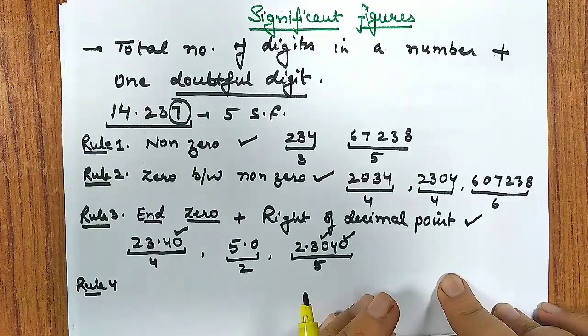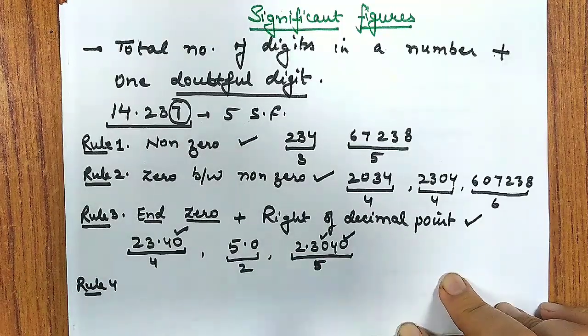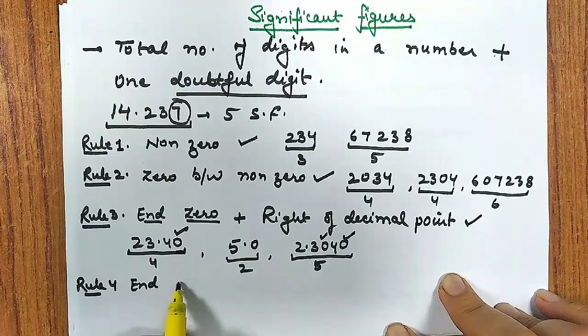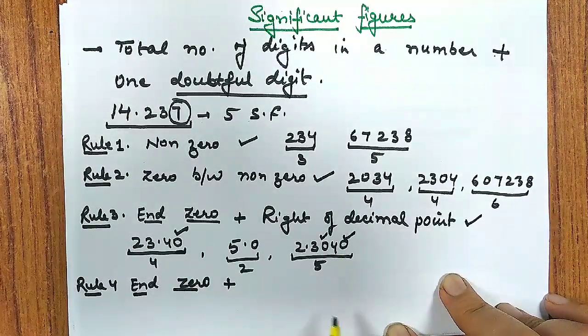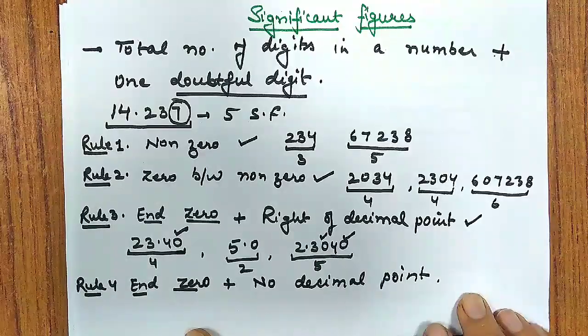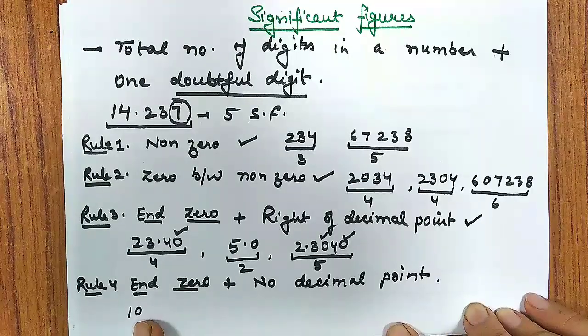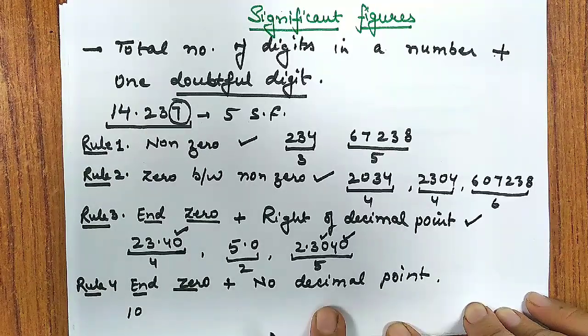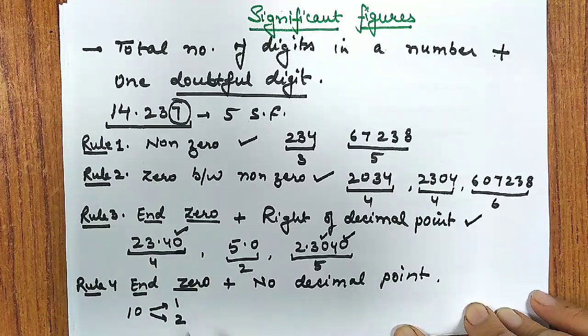Rule 3: if we have any number ends in zero plus right of decimal point, then these zeros are again significant. How? If I write, say, 23040, this zero lies at the end and decimal point to the right. So that zero will also be significant, so here I will be having four significant figures.